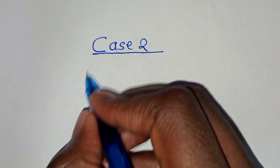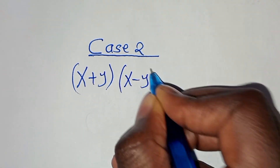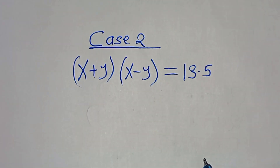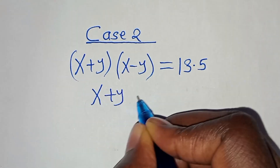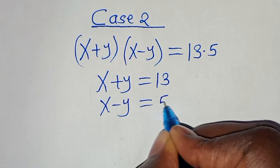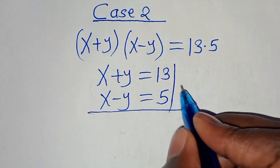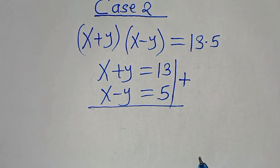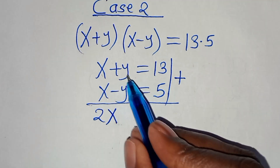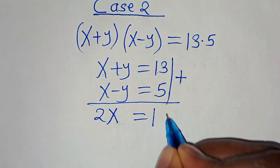In Case 2, we have (x + y)(x - y) = 13 times 5. So we have x + y = 13 and x - y = 5. These are a system of two linear equations. Adding the two equations: x + x gives 2x, and y minus y cancels, so 13 plus 5 equals 18.